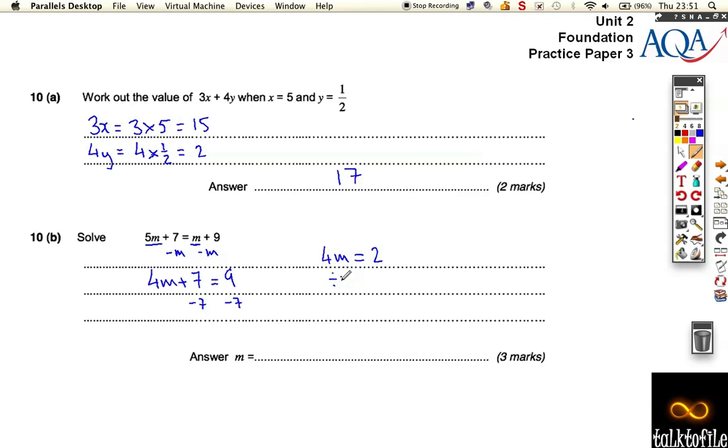And the last step we have to do is we have to divide by 4. We have to find out 4 somethings equal to, so to do that we're going to do 2 divided by 4 is a half.